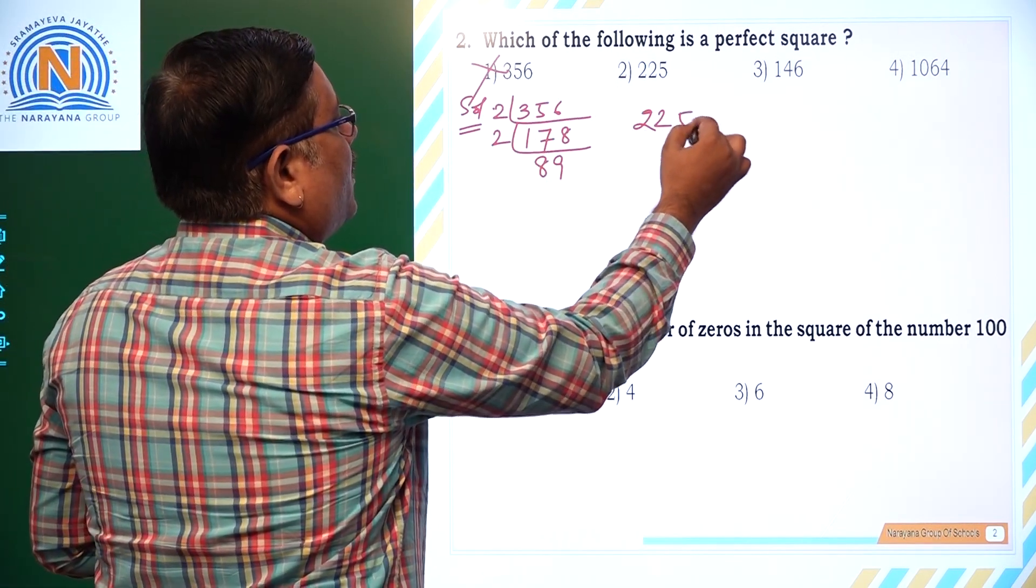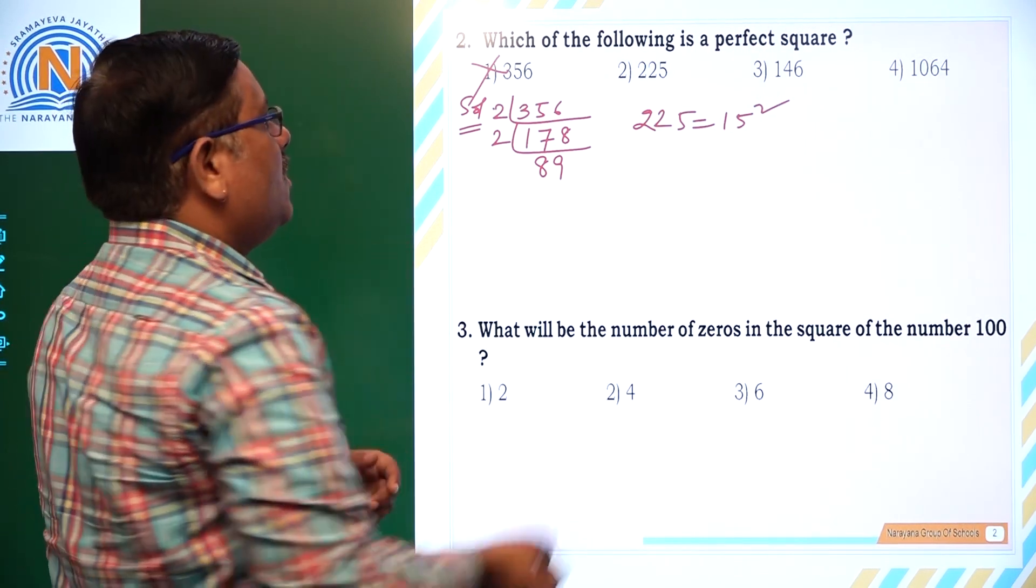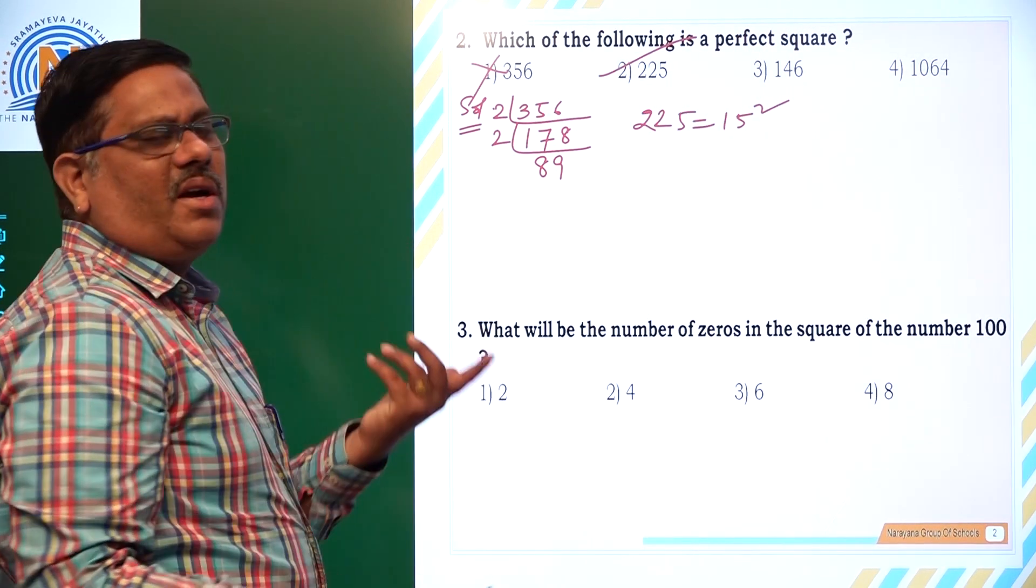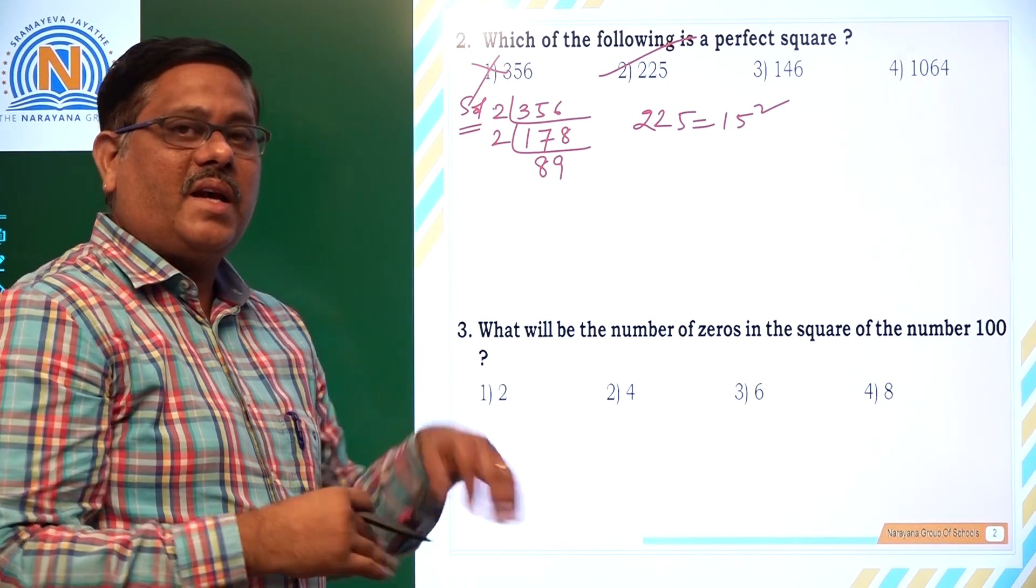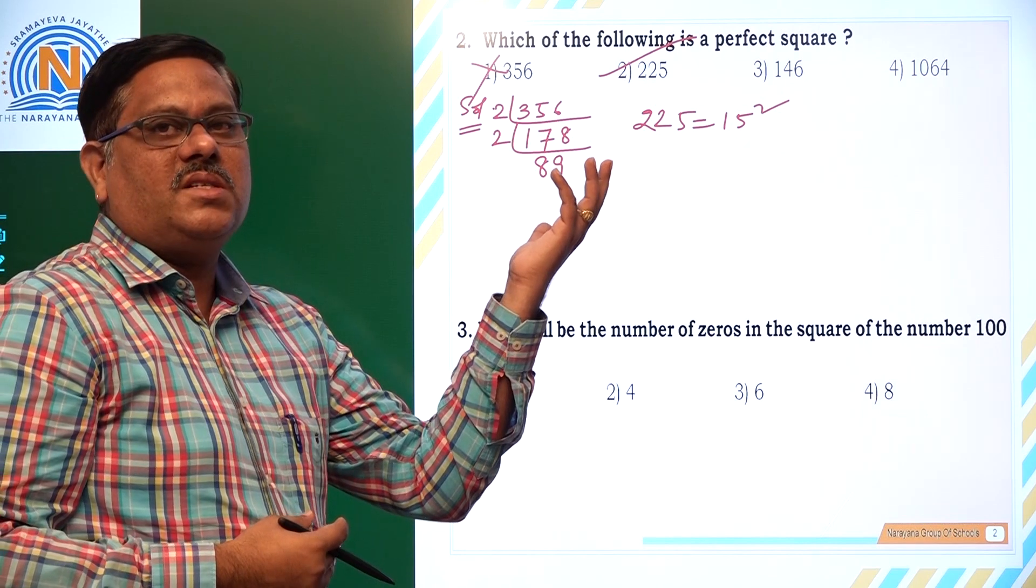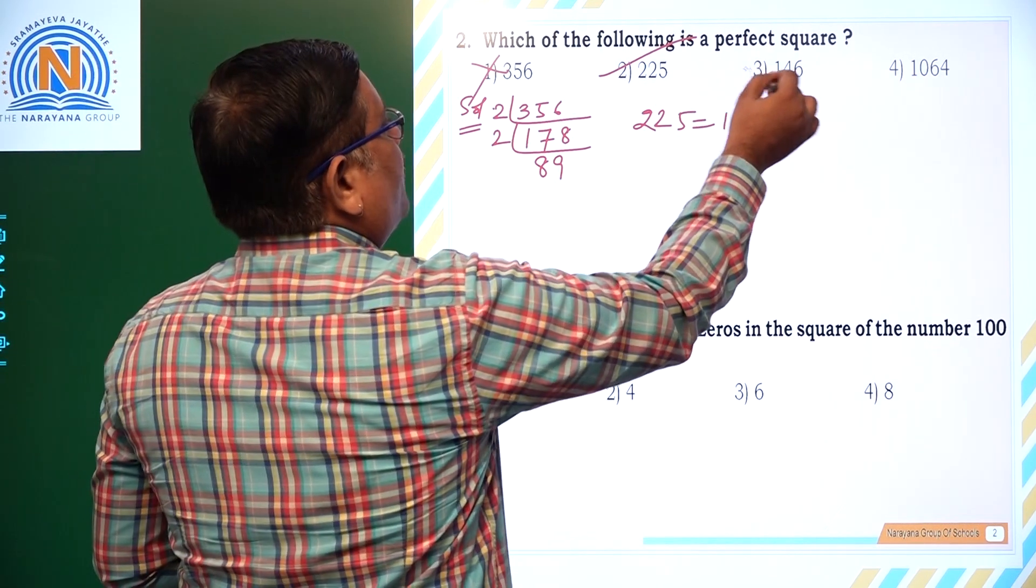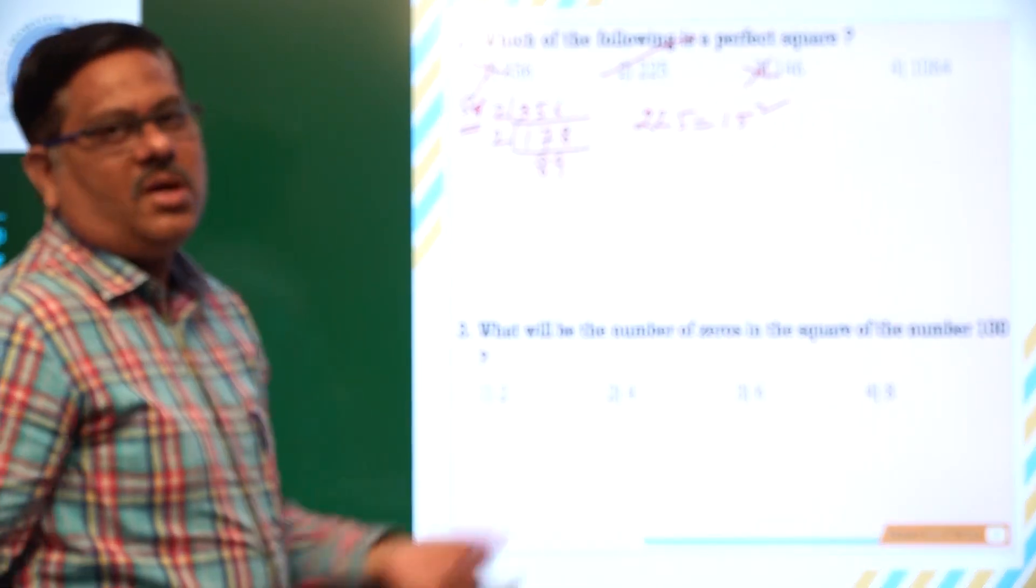225 is equal to 15 squared, so it is a perfect square. 146: 144 is 12 squared, 144. Next perfect square is 13 squared, 169. So 146 is not a perfect square. Similarly, 1064 also you have to check.